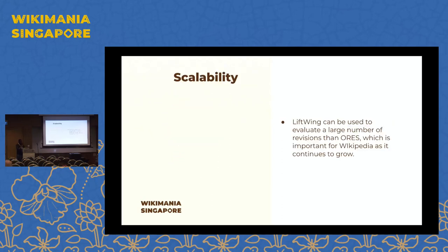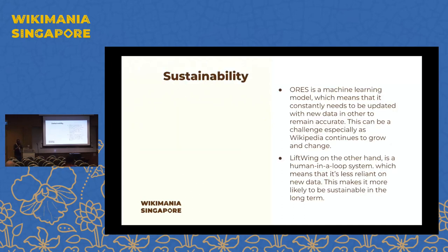In terms of scalability, ORES has limitations in ways that revisions being done are not able to meet current needs. Since Wikipedia keeps growing and technology keeps evolving, the technological infrastructure of Wikimedia also needs to grow, and there need to be improvements in terms of technological infrastructure. That's why we've decided to move onto Lift Wing to improve upon content quality within most Wikimedia projects. It also helps us to update new data in order to remain accurate.